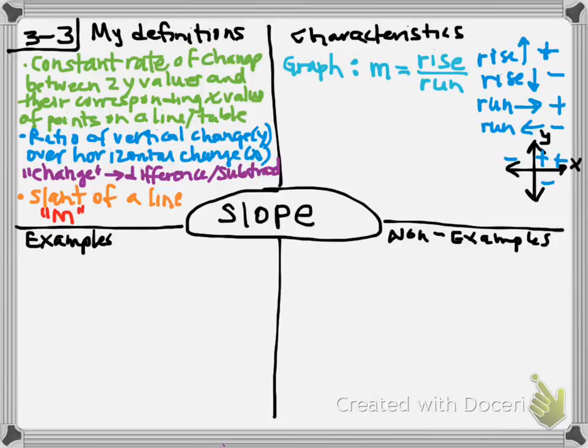So if you have a graph, you can literally count how much you rise over how much you run to get to your other point. But you have to identify two points on there.